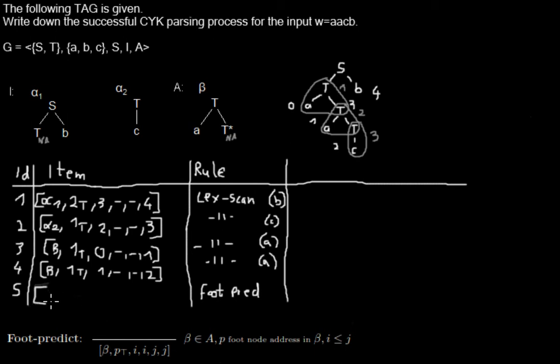One item where the tree is beta. Here is the Gorn address of the foot node - in this case it's the second daughter of the root node so it's two, and it's a top position. I write the span, it's from two to three, and we need to write them down as two to three to three.